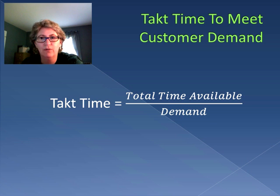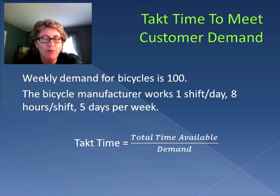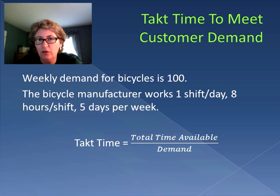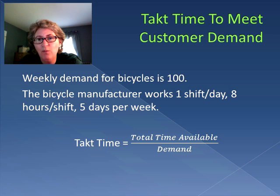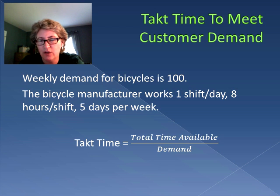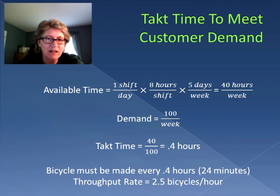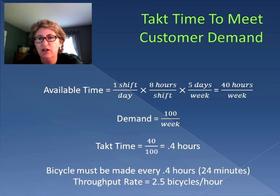Let's take a look at a short example. We have a bicycle manufacturer with a demand of 100 bicycles per week. The manufacturer works one shift a day, eight hours in a shift, five days per week. So we can figure out how much time is available in the process, as well as the demand — 100 per week. We calculate the available time: one shift per day times eight hours per shift times five days per week, which equals 40 hours per week.